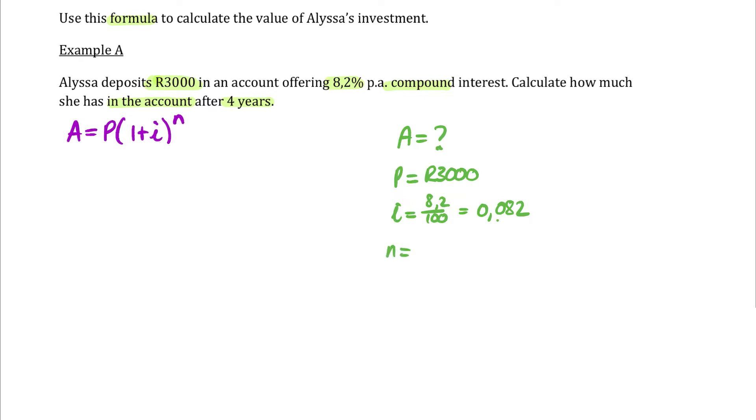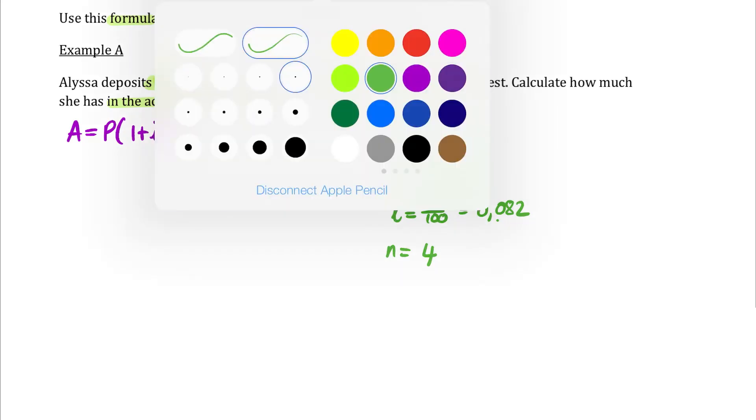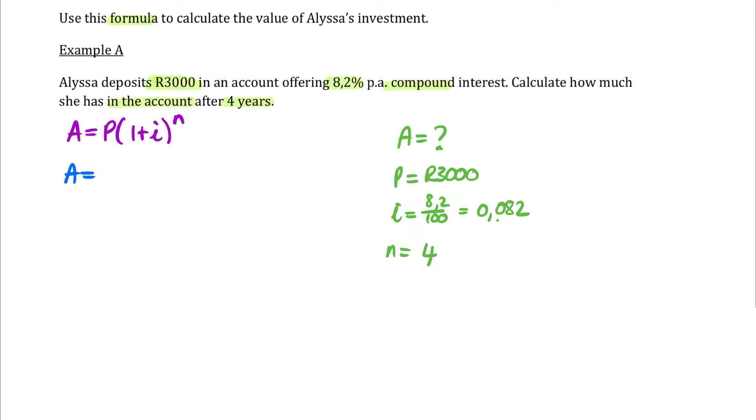And finally, the time period, they said after four years. So remember, yesterday, we went and had to do four calculations at the balance at the end of every year. Now, if we have learned the compound interest formula, we can substitute the values in and it's going to shortcut us all the way to the end.